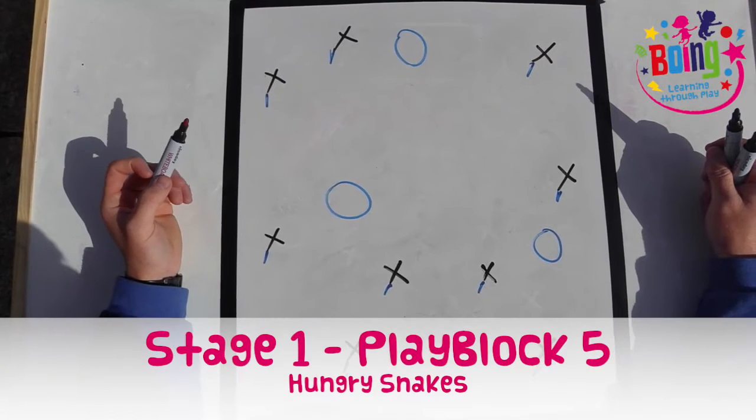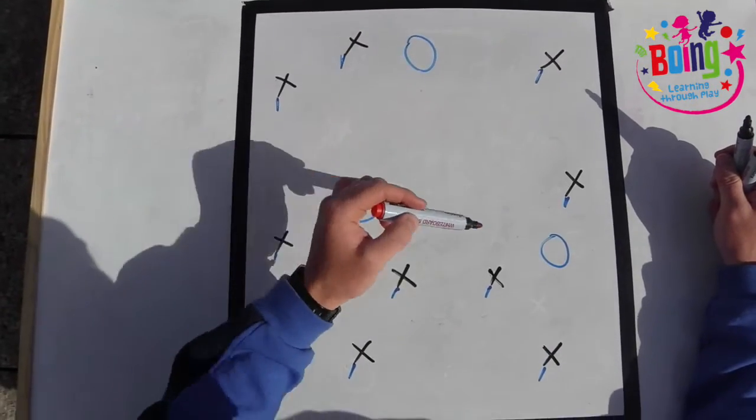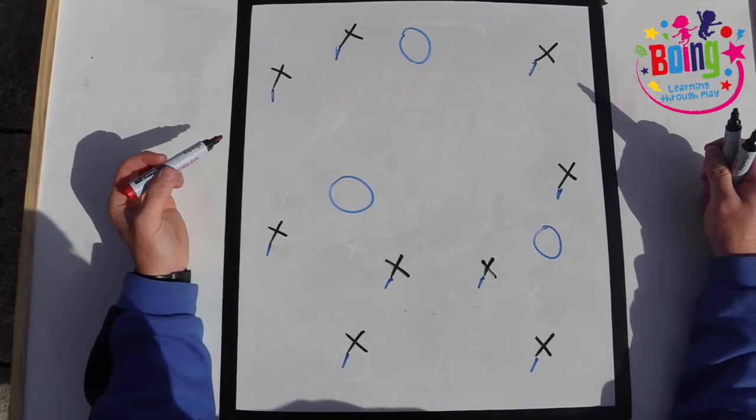This is how to play Hungry Snakes. In the space you are working in, place three hula hoops. These are safe stones.